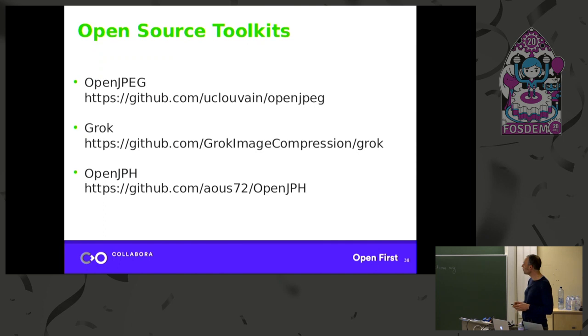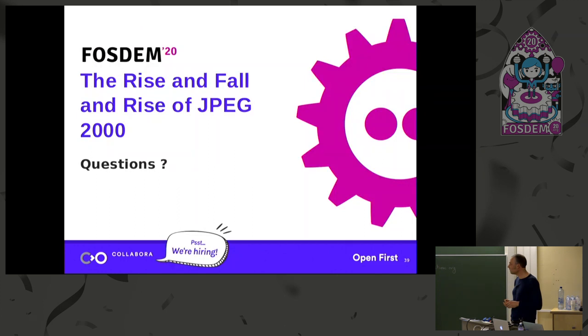These are the open source toolkits. OpenJPEG is the granddaddy of J2K toolkits. There's Grok, which is one that I maintain. And there's something called OpenJPH, which is only for high-throughput JPEG 2000. And any questions? I have a lot of time for questions.